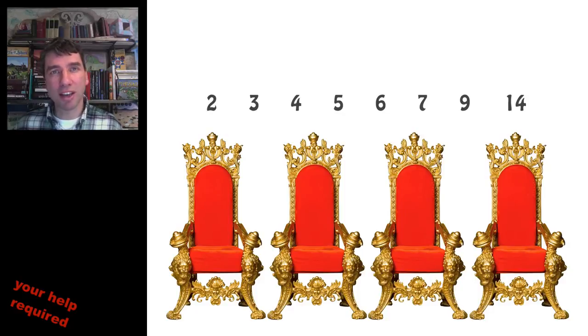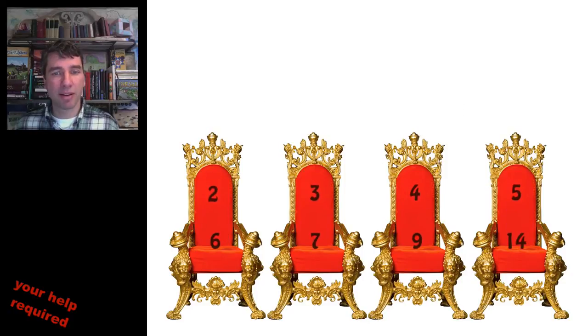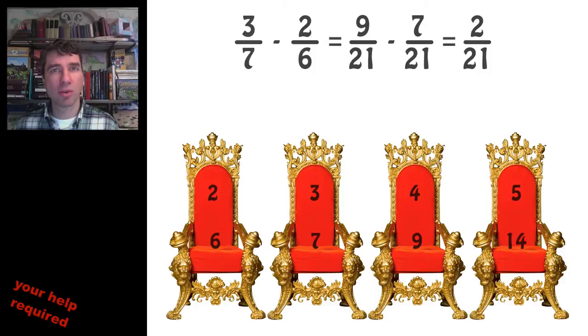Instead of choosing consecutive integers, you can choose any set, and you can try to distribute those so that you minimize the chance of civil war. For example, what is the solution for this set? There it is, and the chance of civil war is 2 over 21, or only 10%. Can you do any better?